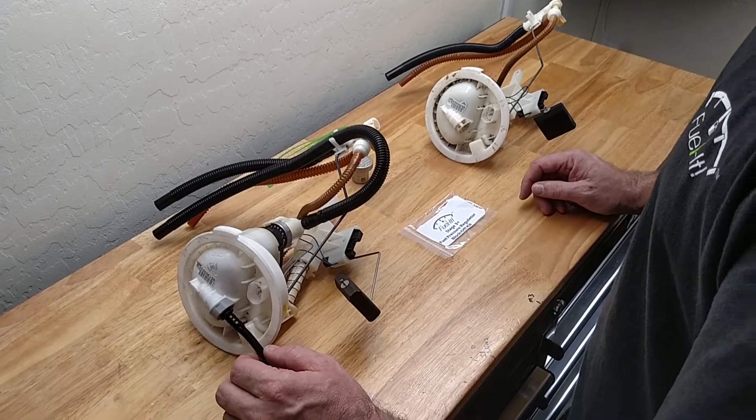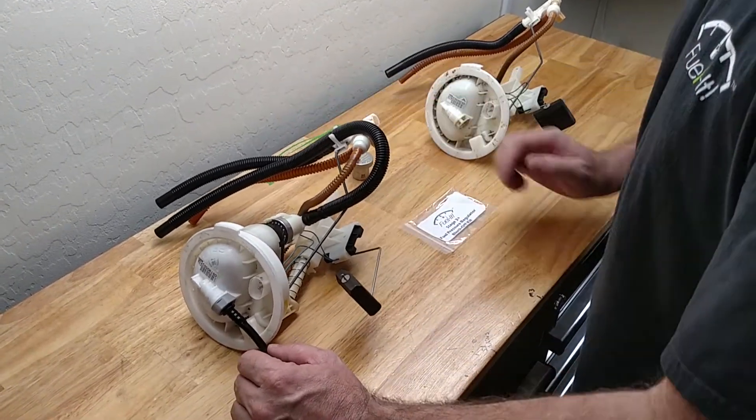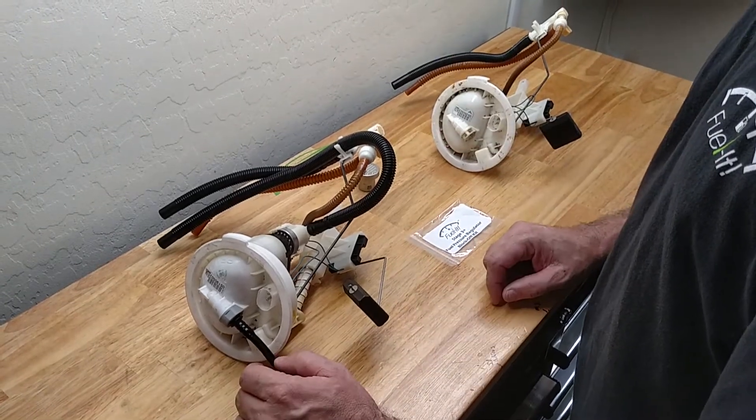Then disconnect all of the plumbing connections on the passenger side so that you're able to remove the filter assembly.